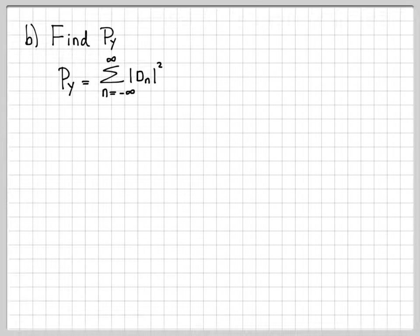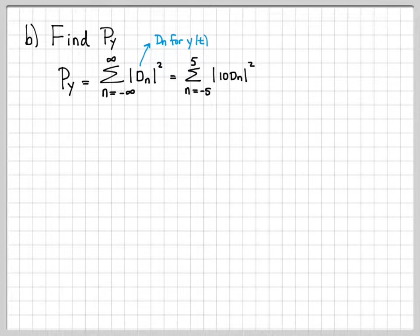Let's compute the power of the output signal y. So in general, the power of a signal can be written as the sum of the magnitude squared of its exponential Fourier series coefficients. So in general, if we knew what the coefficients for y of t were, it would be this. And kind of written here, this would be the d n's for y of t. Well, we know how to do this. We know how to write our d n's for y of t in terms of the d n's for x of t, right?